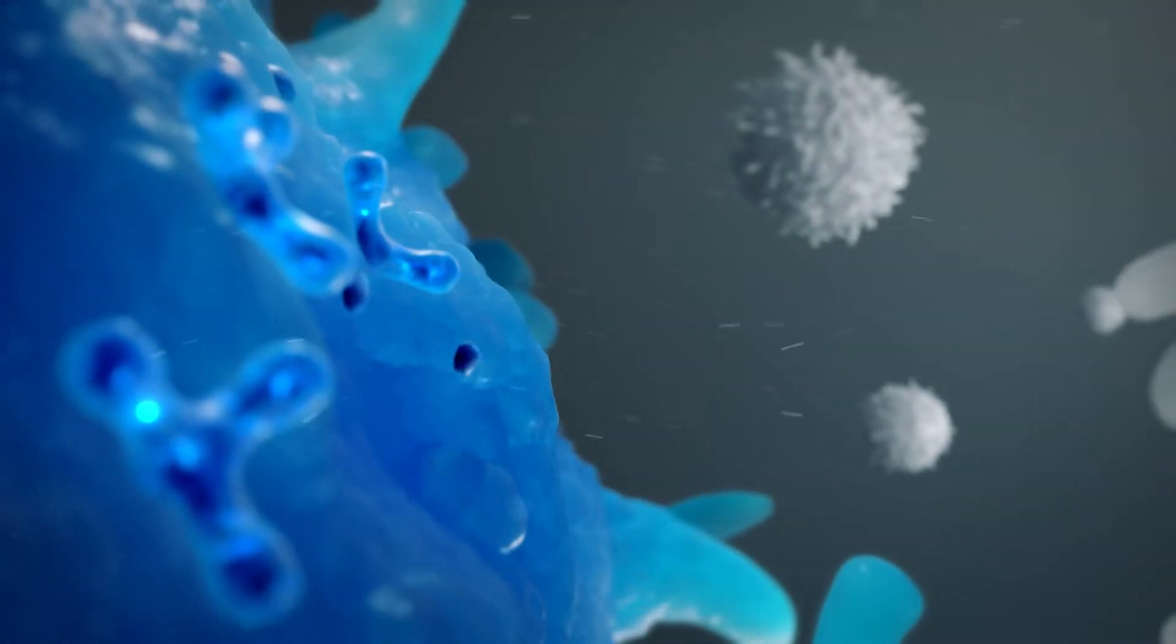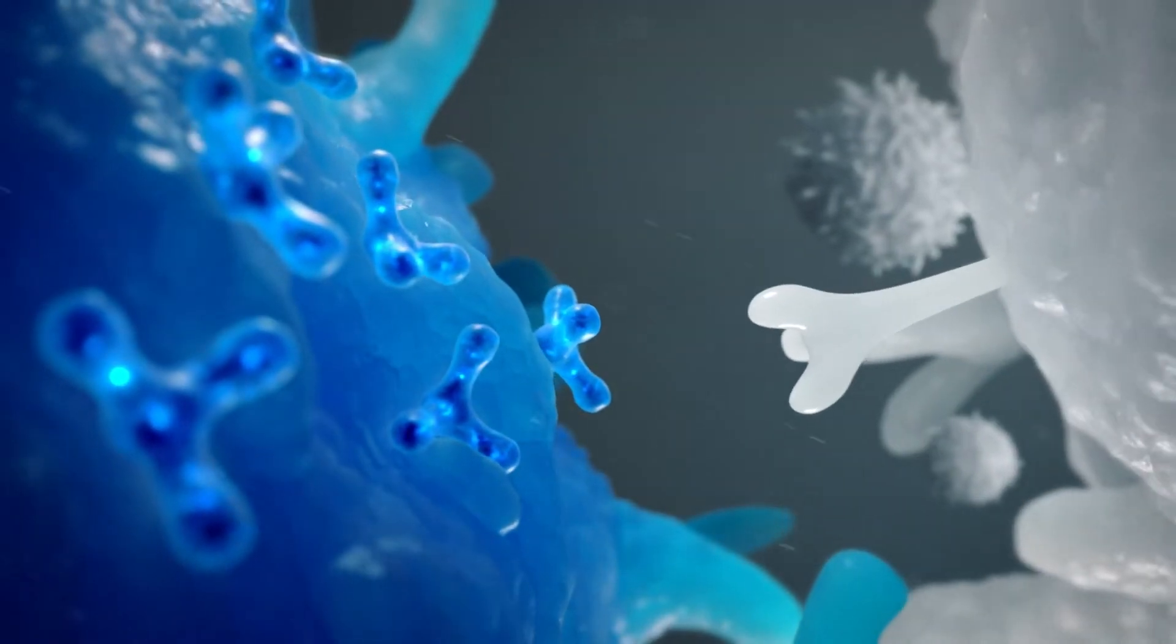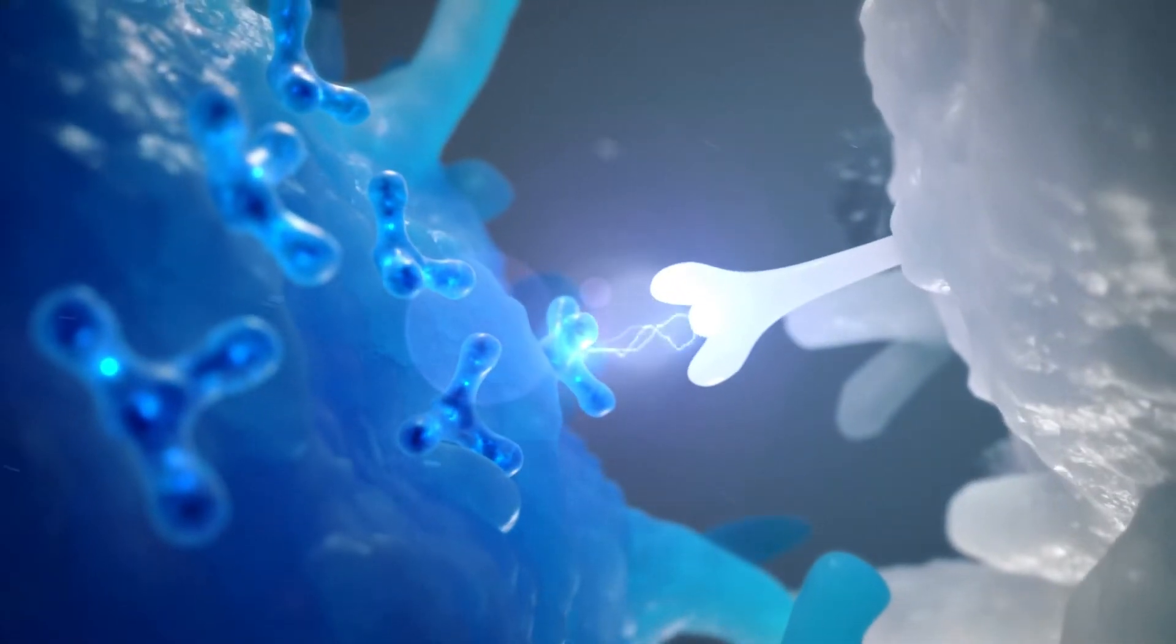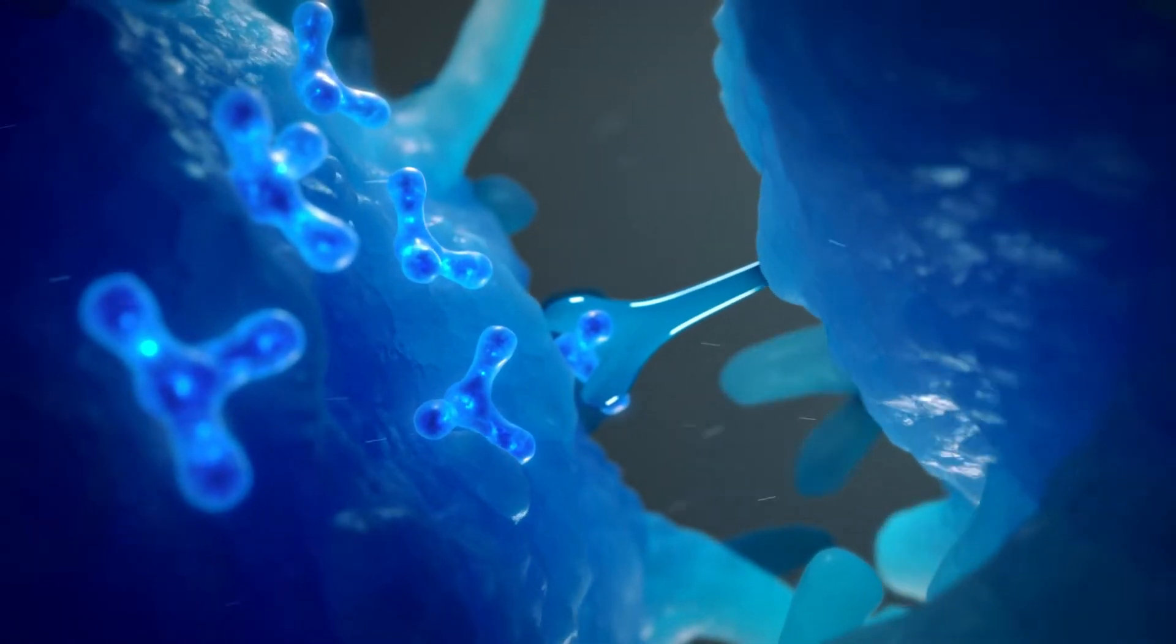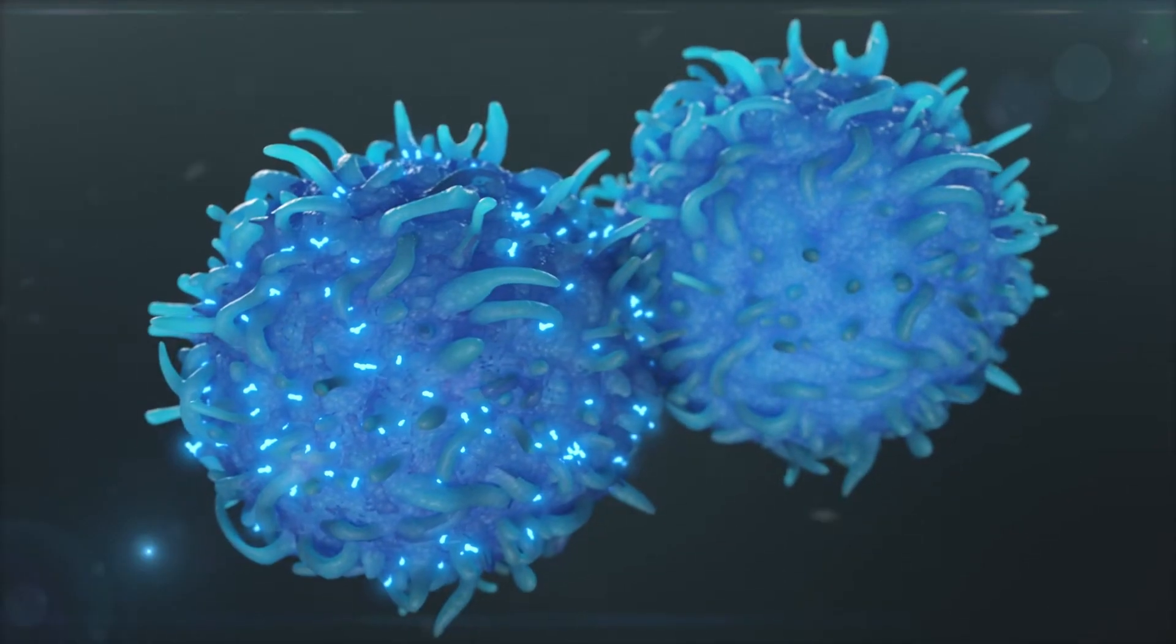From there, the newly educated cell creates more transfer factors to place on its surface. As educated immune cells come into contact with uneducated immune cells, they pass their immune system knowledge to those cells.